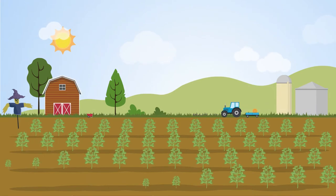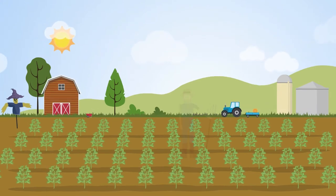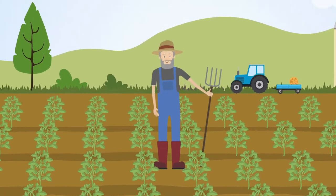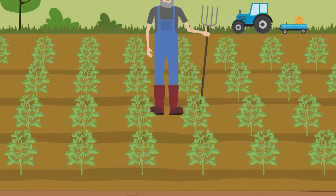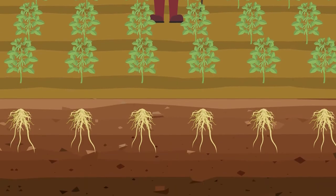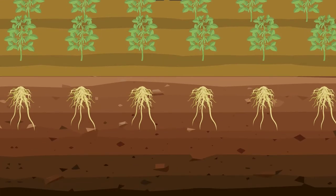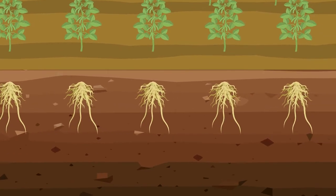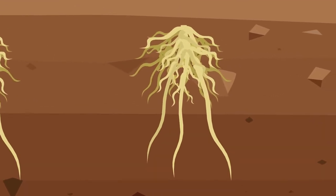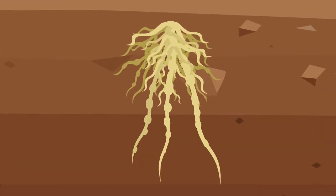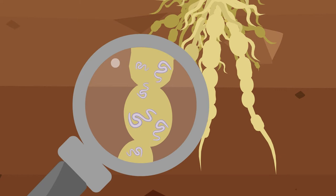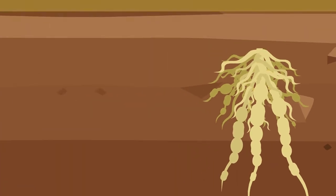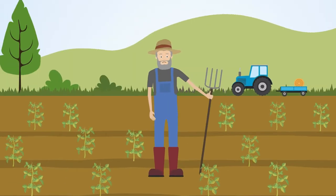Soybean is one of the most important grain crops in the United States. In the southern U.S., many farmers grow soybean on land previously cropped only to cotton. Many cotton-associated pathogens impact soybean, in particular the southern root-knot nematode. This nematode can inflict severe damage to soybean, resulting in significant yield loss.